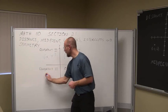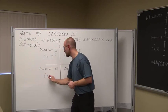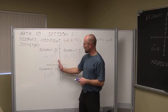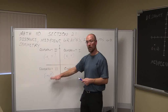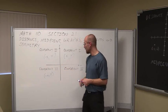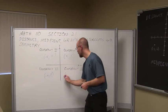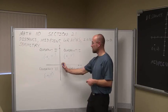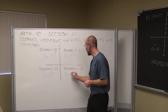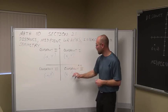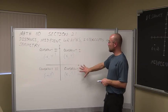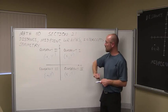Moving down to quadrant three, both x and y are negative values because we're to the left of the y-axis and below the x-axis. Negative x values, negative y values. And then finally in the fourth quadrant, our x values are positive because we're to the right of the axis, and our y values are negative because we're below the x-axis. This is our Cartesian coordinate system.